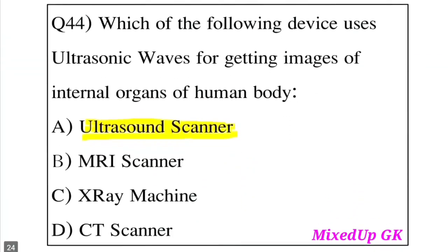Question 44: Which of the following devices uses ultrasonic waves for getting images of internal organs of the human body? Option A: Ultrasonic scanner. Option B: MRI scanner. Option C: X-ray machine. Option D: CT scanner. The answer is Option A, Ultrasonic scanner. An ultrasonic scanner uses ultrasonic waves.